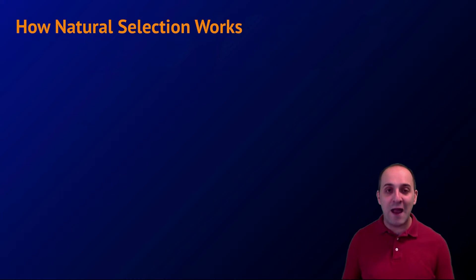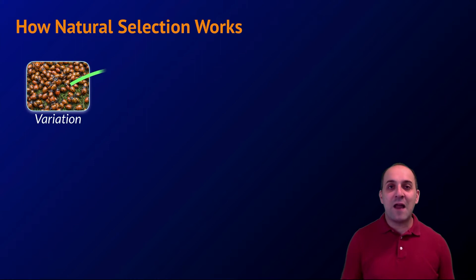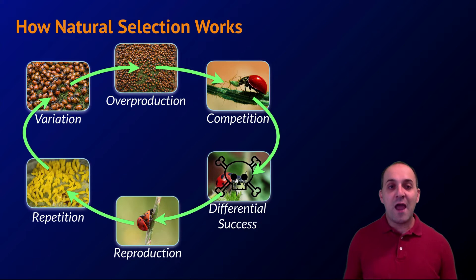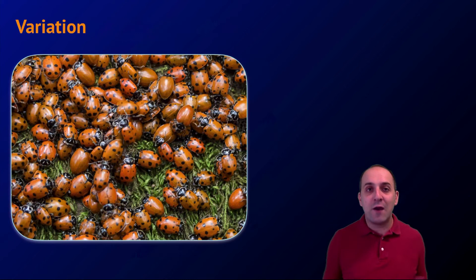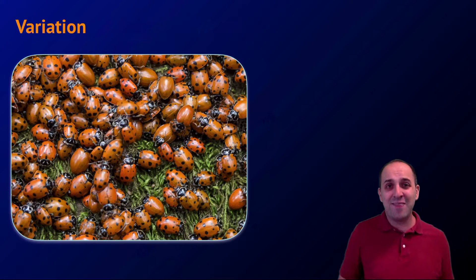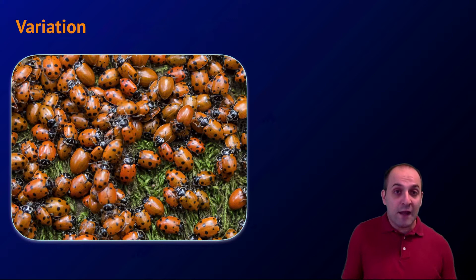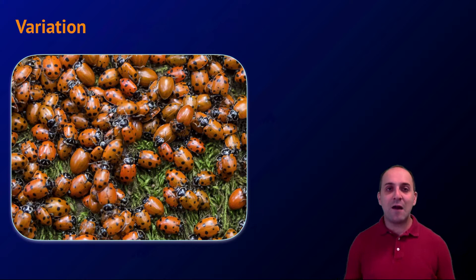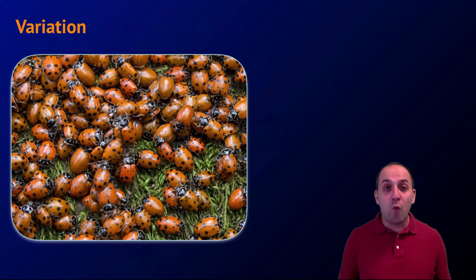Natural selection is not a complicated process. I like to think of it as a cycle that repeats from generation to generation, broken down into six steps. The first is variation: among all living things, every member of every generation is unique in some ways. Here's a picture of ladybugs — each one has slight or even not-so-slight differences in coloration and spot patterns. This is true of all organisms, from bacteria to elephants to humans. Variation is the raw material necessary for evolution.